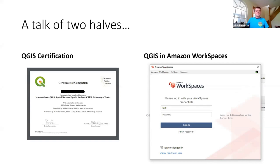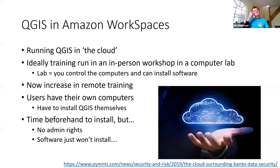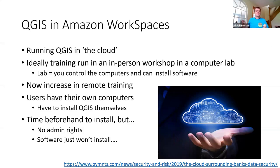So that's a whistle-stop tour of the QGIS certificate. The larger chunk of the talk is QGIS in Amazon Workspaces. In true conference style, I attended a session earlier and I think there's a different Amazon service called Amazon AppStream that might be really useful for this — so I may need to change all these slides. I've been thinking about running QGIS in the cloud. My background is that I run training workshops, often previously in-person in a computer lab, which is great because all the computers are exactly the same setup and I can ask the lab managers to install a specific version of QGIS.